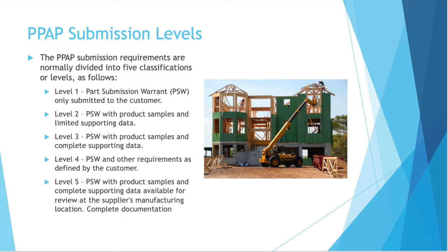The PPAP has five different submission levels. There is a lot to the PPAP process, so you don't do it all at once. Think of it like building a house. You start at level one: Part Submission Warrant (PSW), only submitted to the customer. Then you add product samples and some data. Then product samples and complete data. Then the PSW with any other requirements defined by the customer. And finally, the PSW with product samples and complete supporting data for review at the supplier's manufacturing site.